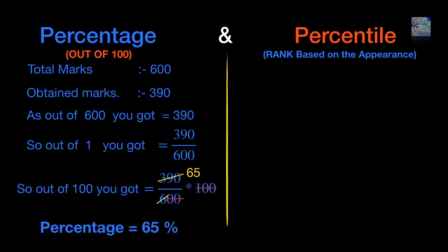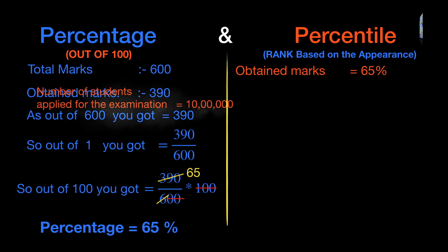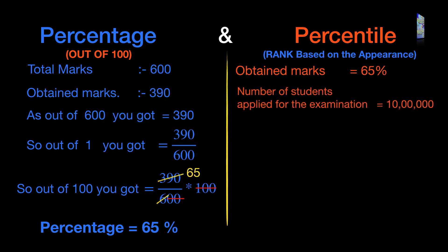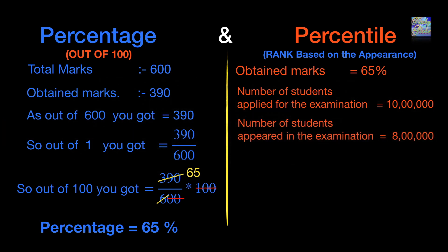Now let me tell you about percentile. In case of percentile, I'm taking the same example where you got 65% marks again, but here some other factors also affect the percentile. The factors are number of students applied for the examination. Let's say 10 lakh students applied and 8 lakh appeared in the examination.